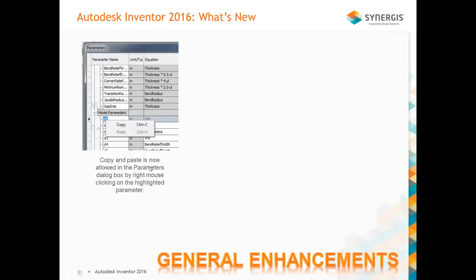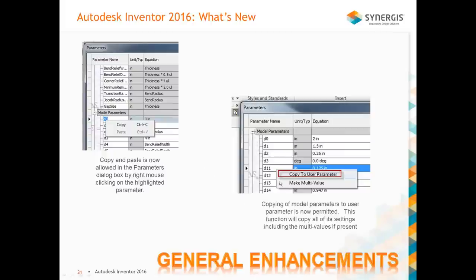For general enhancements — and we're running out of time, so I'll speed this up — for parameters, you can now copy and paste. Before you couldn't do that. If a parameter is equal to another parameter, I had to type it and maybe didn't remember the name — now I can just copy and paste it. I can also take a model parameter and copy it to a user parameter. If it's a multi-value parameter, it brings all that information along with it.